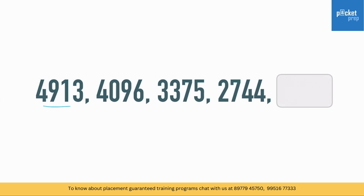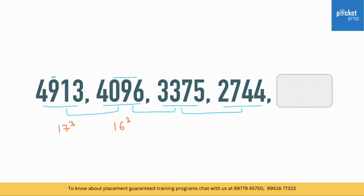Let's try one more: 4913, 4096, 3375, 2744. The numbers are decreasing with drastic reductions, so it's not squares — think of cubes. This is 17 cubed, 16 cubed, 15 cubed, 14 cubed. So the next will be 13 cubed, which is 2197.